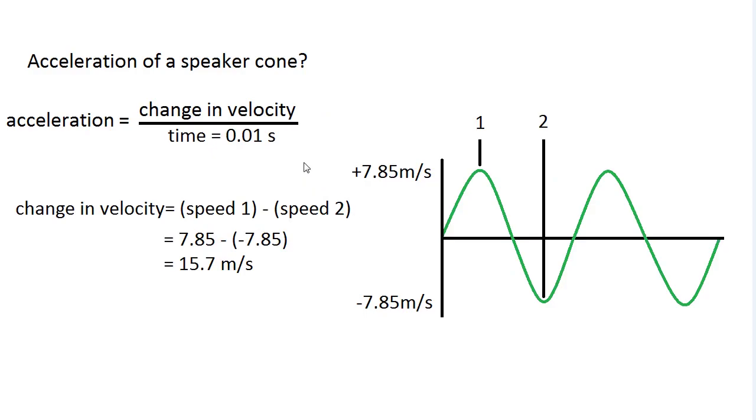So here you can see it takes a hundredth of a second to change velocity. And now to get the change in velocity. Once again, we found that the highest velocity forward was 7.85 meters per second, and the highest velocity backward was negative 7.85 meters per second. So to get the change in velocity, you just subtract one from the other. You find speed 1 minus speed 2, and because a double negative makes a positive, you find that its change in velocity is 15.7 meters per second.